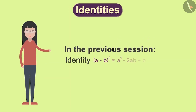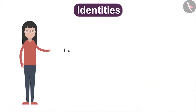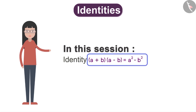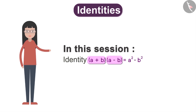In the previous session, we have seen this identity and its application. Now friends, in this session, we will see one more identity. This equation says that if we add two variables a and b and multiply it with a minus b, then it is equal to a square minus b square.